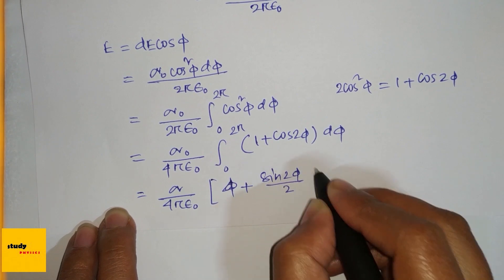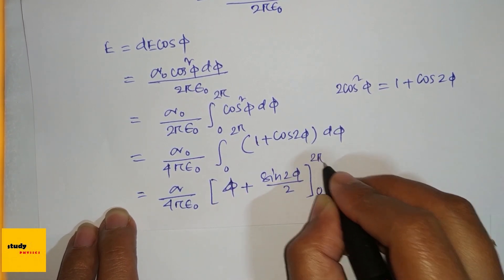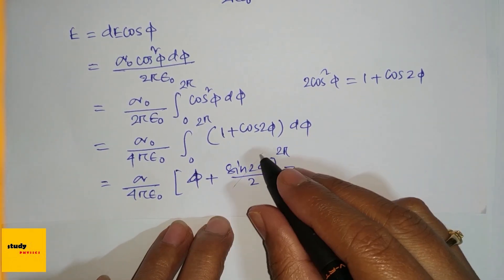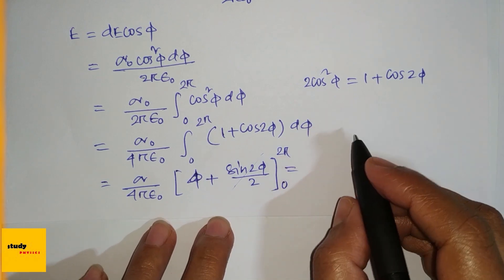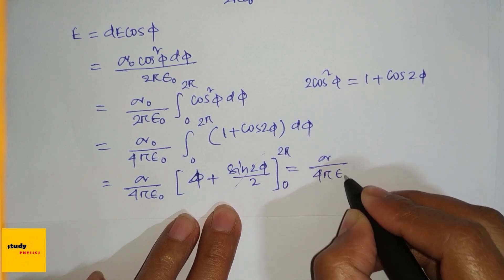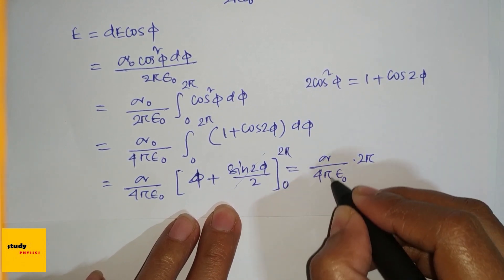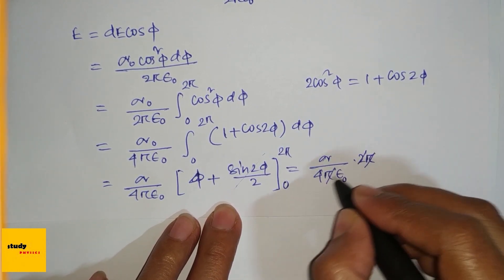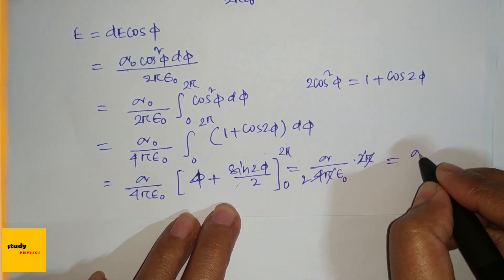Integrating: phi plus sine(2phi) divided by 2, evaluated from 0 to 2π. This term will be zero for 2π and zero also. So we get sigma_0 divided by 4π epsilon_0 times 2π.